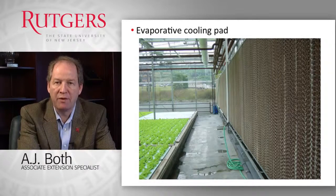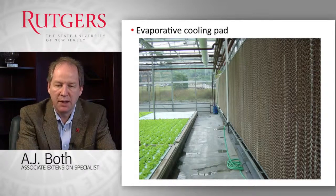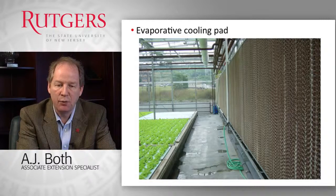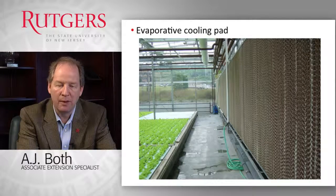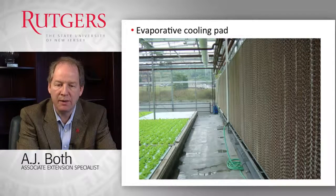Here is an example of an evaporative cooling pad. It is typically located along an entire sidewall of a greenhouse on the sidewall where we have the ventilation inlet window. You can see in this picture that behind the pad is the inlet window, so the air comes in through the window and then has to travel through this evaporative cooling pad before it enters into the greenhouse environment.